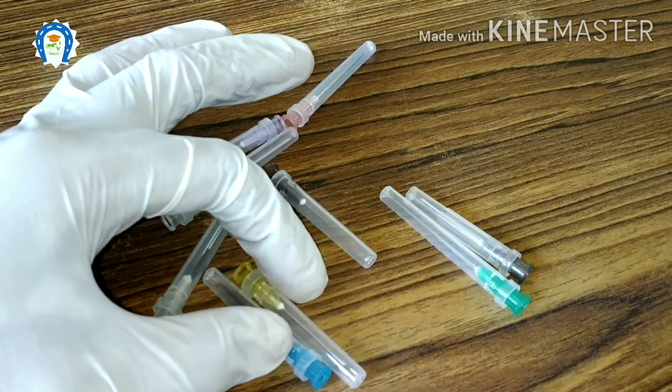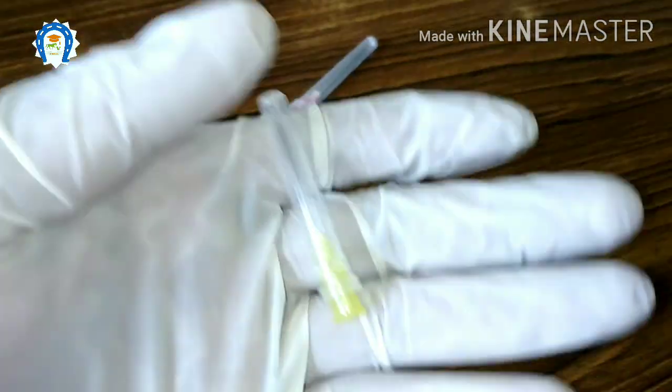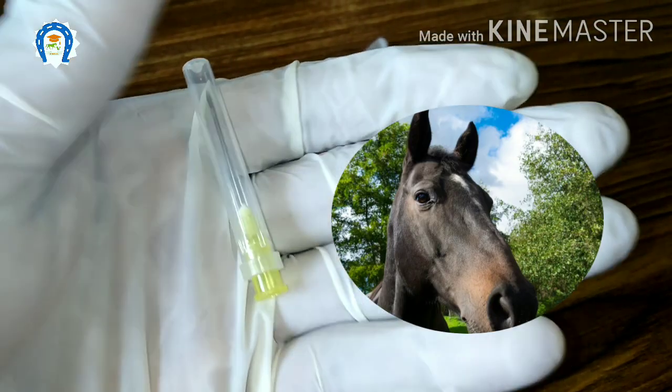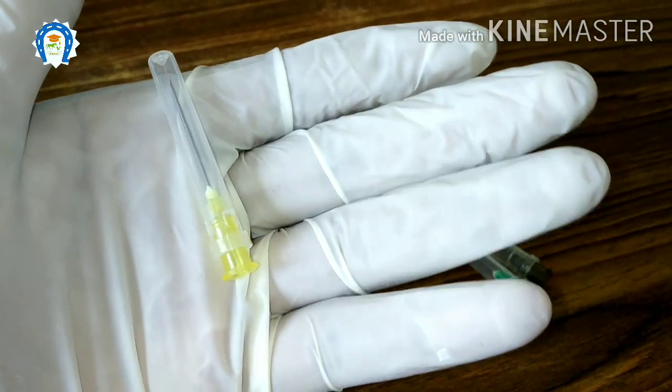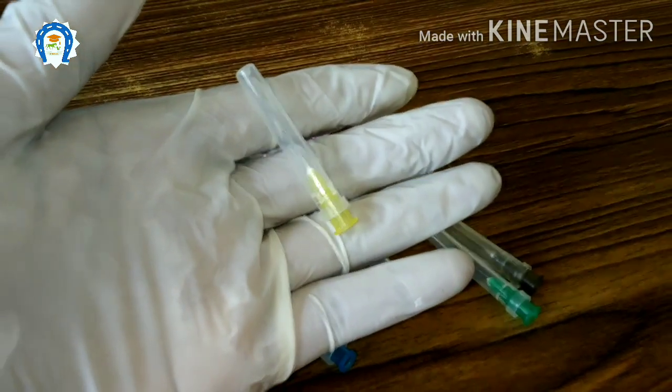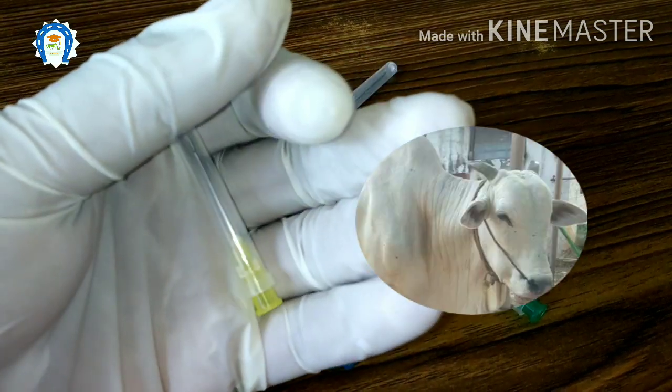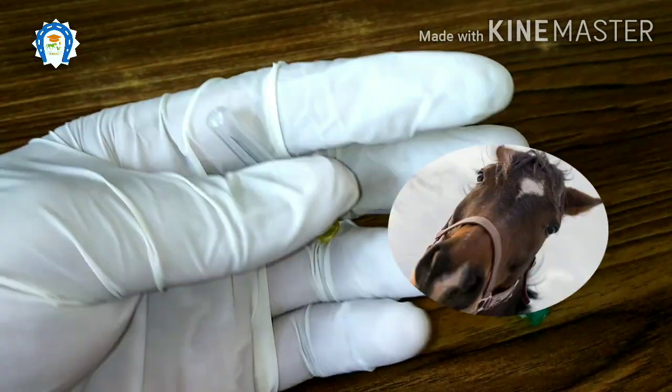This is the 20 gauge needle, yellow in color. We commonly use this in our practice. This is suitable to give intramuscular and intravenous injections in horses. In cows, sheep, and goats, we can use this to administer fluids. This is the ideal needle to give epidurals in cattle, buffaloes, and horses.